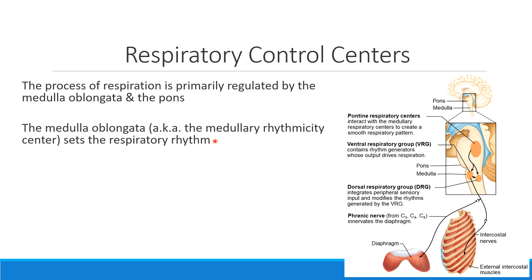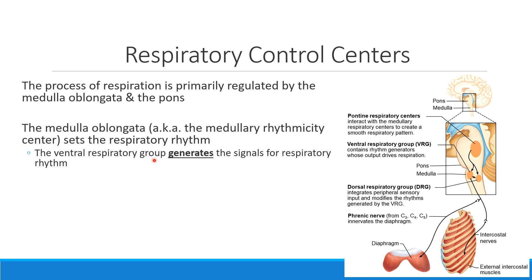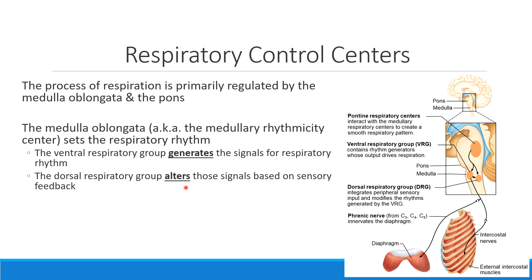There are two parts to setting this rhythm. The first part is what's done by the ventral respiratory group, which is found on the front side of the medulla — ventral means toward the front. The ventral respiratory group is what actually generates the signals that cause us to start the process of inhalation. As the ventral respiratory group generates a signal, this signal can be modified or altered based on feedback from the dorsal respiratory group.